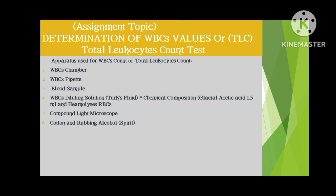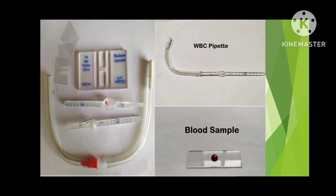Our assignment topic is the determination of the total leukocyte count test. Certain apparatus are required: the first is a WBC counting chamber, the second is a WBC pipette, the third is a blood sample, the fourth is WBC diluting solution or turk's fluid, the fifth is a compound microscope, and the sixth is cotton with rubbing alcohol or spirit.